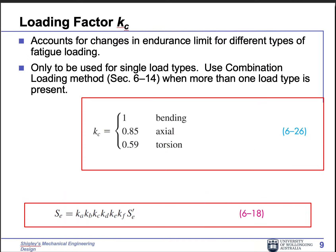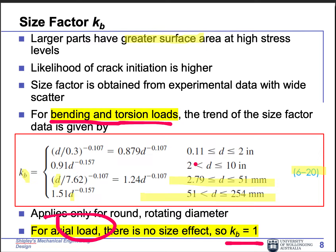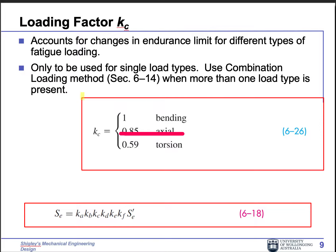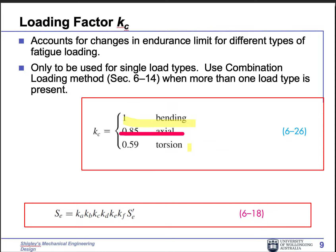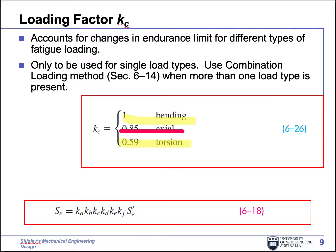Kb goes together with Kc, which is the loading factor — how the component is loaded. For axial loading, Kc is 0.85. So for axial loading, we don't consider Kb, but Kc takes 0.85. For bending, Kc is not considered, but Kb must be considered. Torsion is the most complicated case — you have to consider both Kb and Kc, where Kc takes 0.59. So in all three loading types, Kb and Kc always count together. With Ka, Kb, Kc, and Se prime from the ultimate tensile stress, you get Se, the endurance limit.